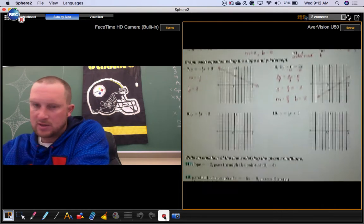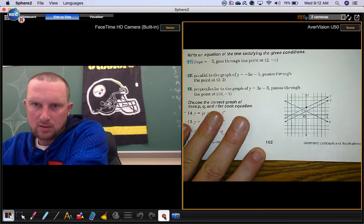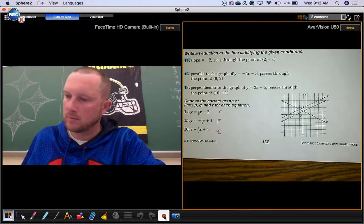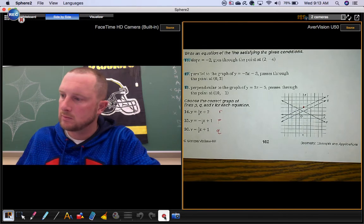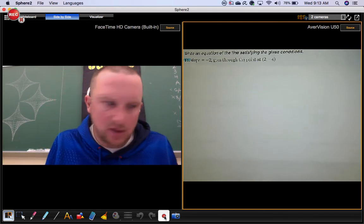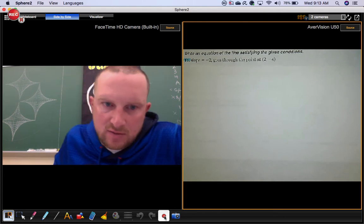This is practice 4-6. We're going to look at numbers 11, 12, and 13. We're going to write equations of lines. In this first problem we want to write the equation of a line that has a slope of negative 2 and goes through the point positive 2, negative 4.